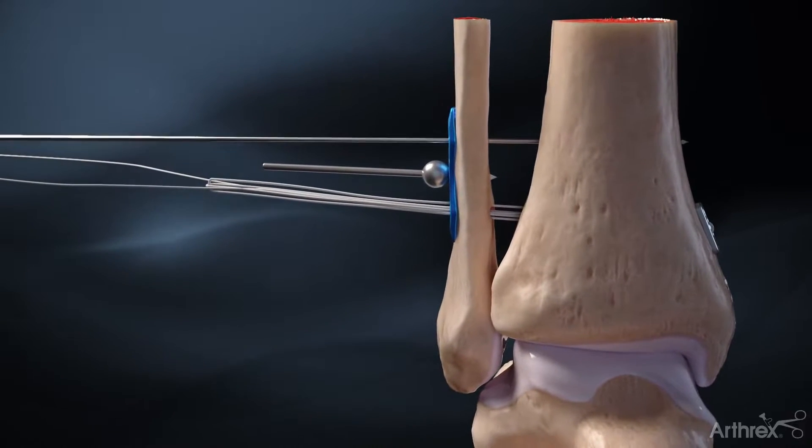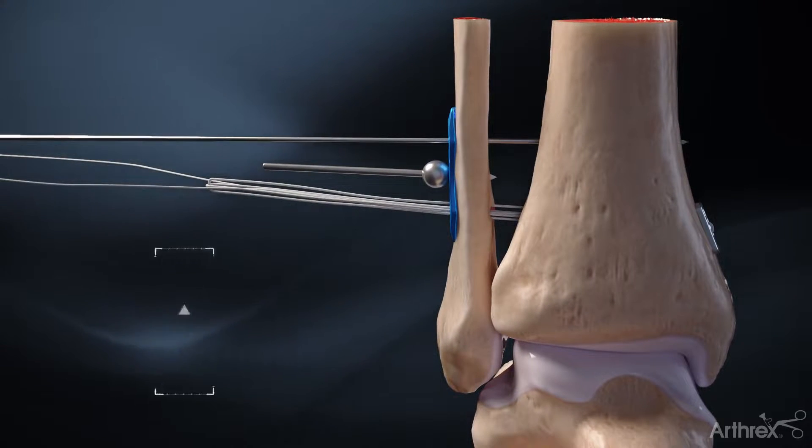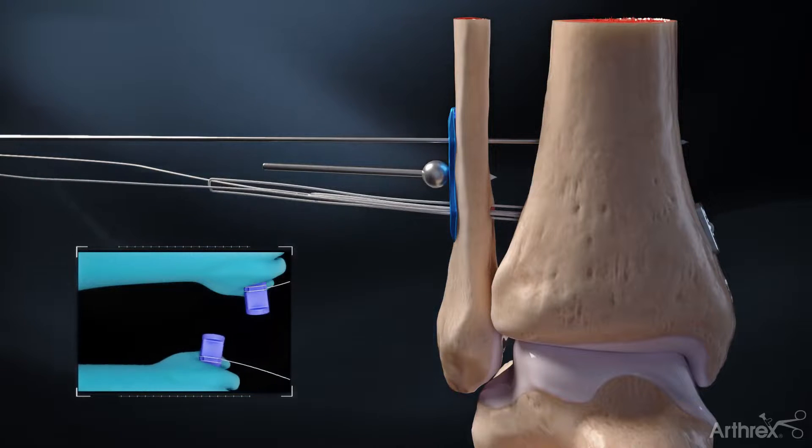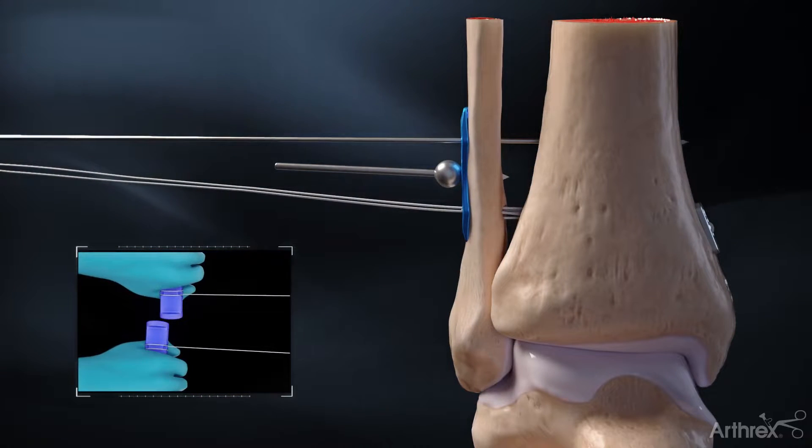Wrap each suture tail two to three times around the XP tensioning handles. Pull the suture straight back one at a time. The lateral button will sit flush.